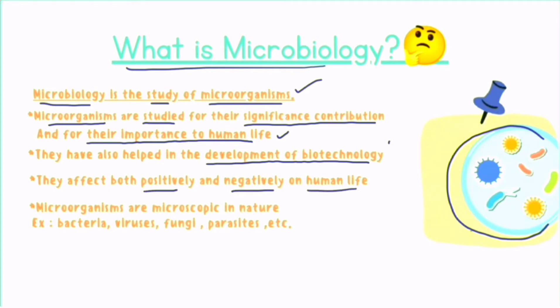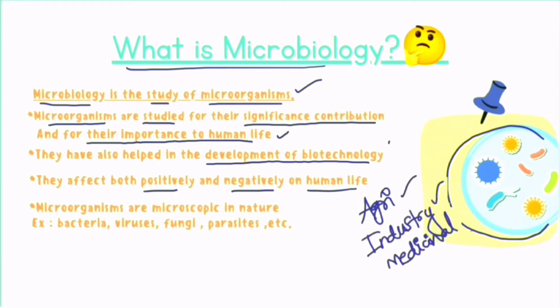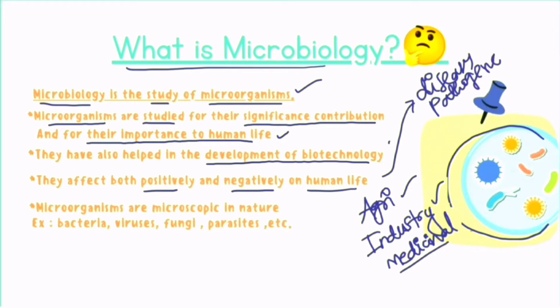Microorganisms affect human life positively, for example in the sectors of agriculture, industry, and medicine. They also affect human life negatively because they cause diseases, have pathogenicity, and are toxic. Microorganisms are microscopic in nature — we cannot see them with our naked eyes; we can only see them under a microscope. Examples include bacteria, viruses, fungi, and parasites.